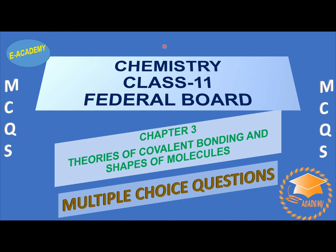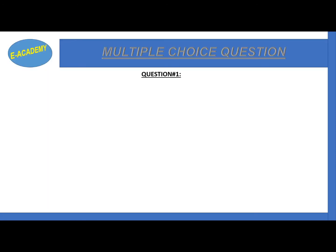Asalaamu alaykum students, I hope everyone will be fine. Today we'll discuss Chemistry Class 11 Federal Board Chapter 3, Theories of Covalent Bonding and Shapes of Molecules MCQs. Now, number one MCQ is the bond energies of fluorine, chlorine,